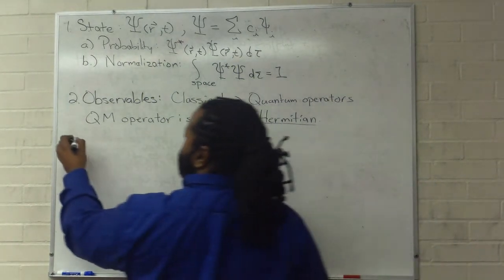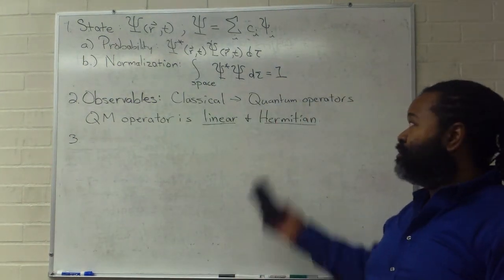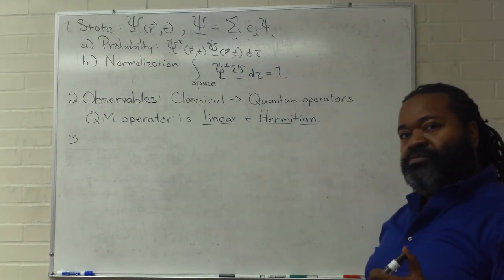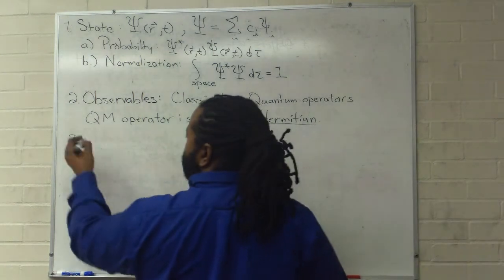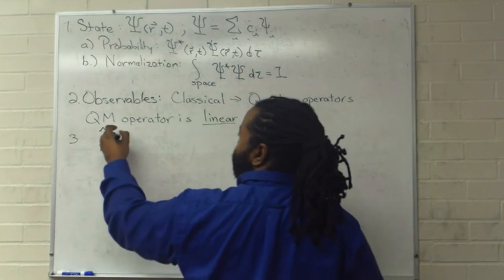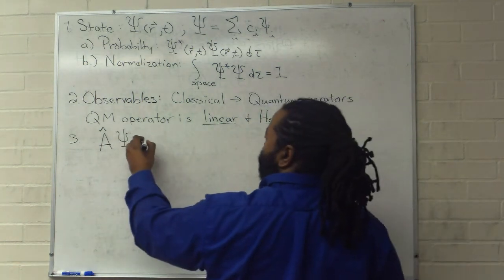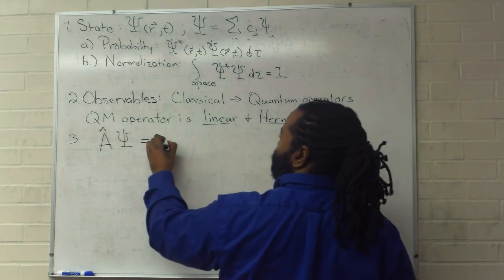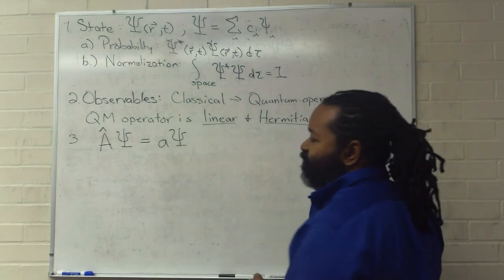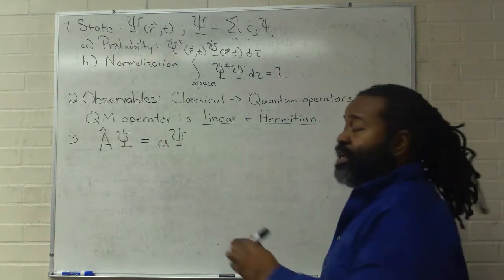The third postulate says that if we have an operator and we have a state, this will give us an eigenvalue equation. So operator A with a proper eigenfunction wave function will give us eigenvalue A with the wave function back. In this case, little a is a scalar.